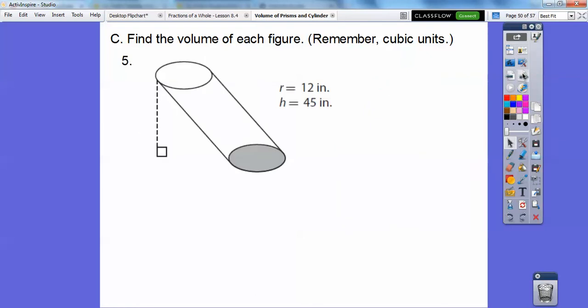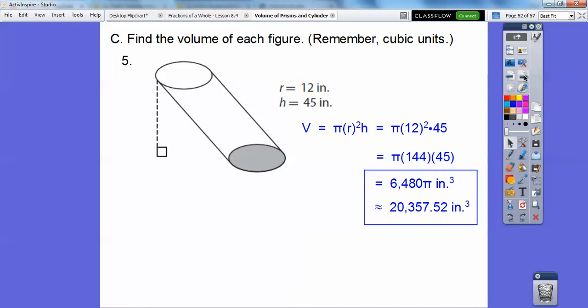So here's an oblique cylinder. Here's the radius, the radius is 12, the height is 45, πr²h. So 144 times 45, and we get that as our answer.